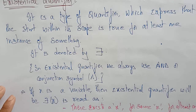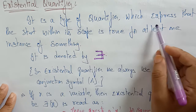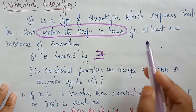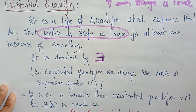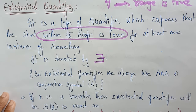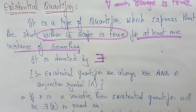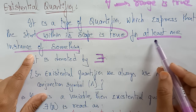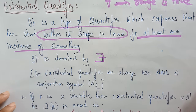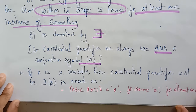The existential quantifier is represented as the reverse of the letter E. It is a type of quantifier which expresses that the statement within its scope is true for at least one instance of something. In the existential quantifier, we always use the conjunction (AND) symbol.